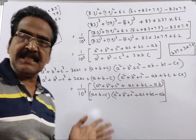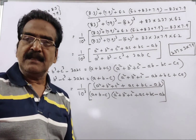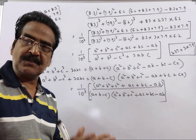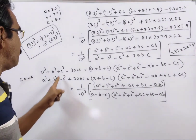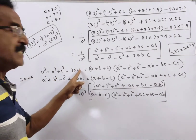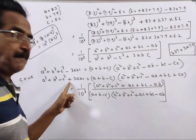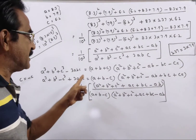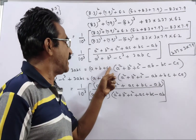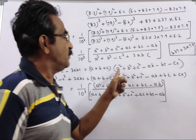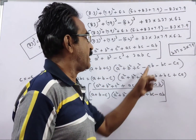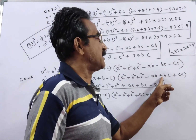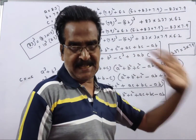Here let us put C equal to minus C. Then this identity reduces to: A cube plus B cube minus C cube plus 3ABC is equal to A plus B minus C, into A squared plus B squared plus C squared plus BC plus AC minus AB.